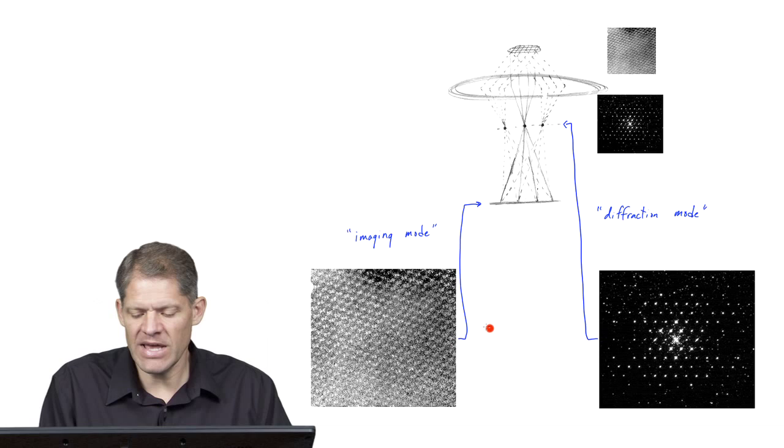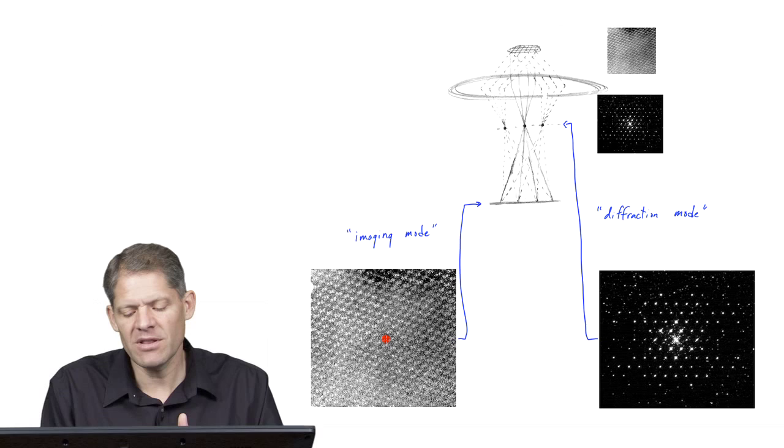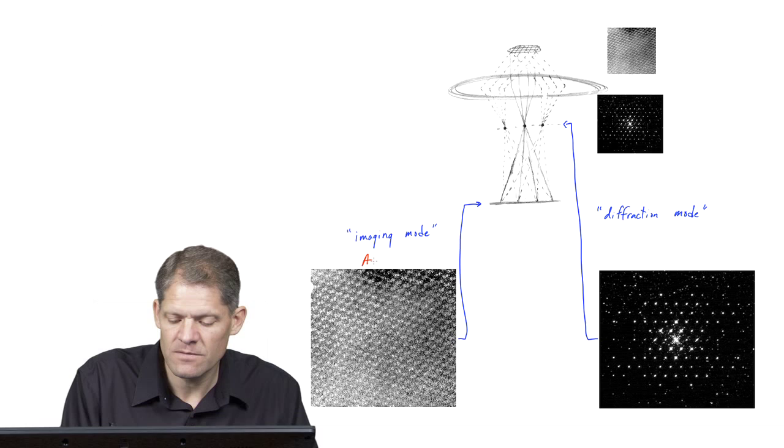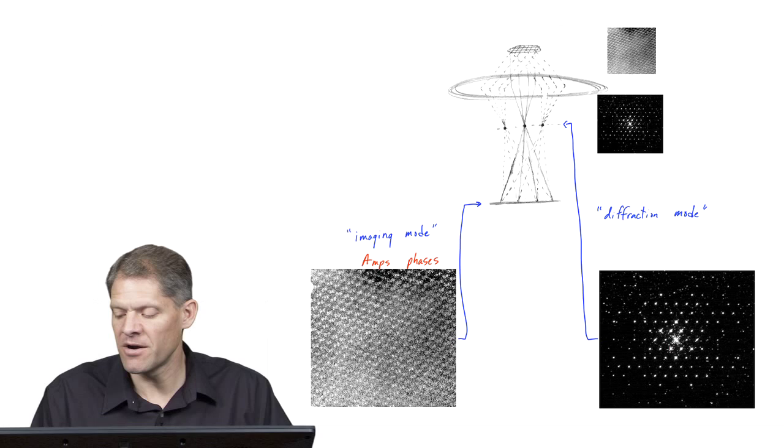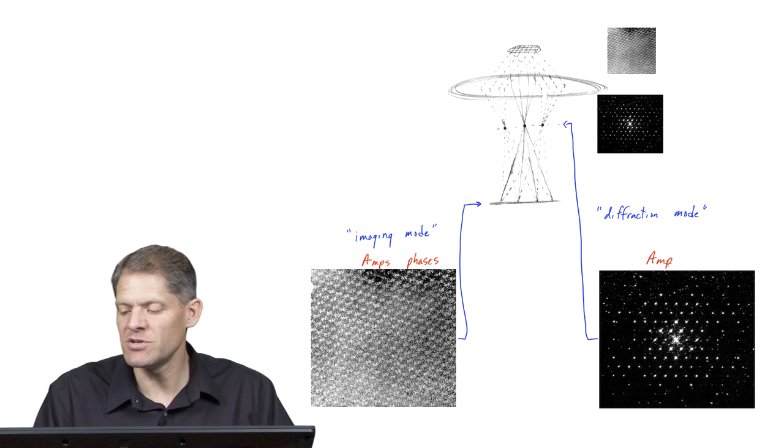The first big difference is that if you record an actual image of your sample, you can then calculate the Fourier transform of that image and recover both the amplitudes and the phases in the transform. However if you only record a picture of the diffraction pattern, phase information is lost and all you get is the amplitudes.